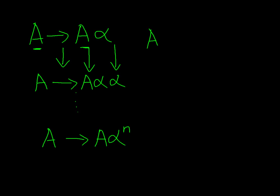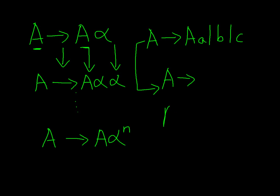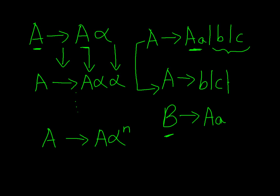Let's say A produces A followed by terminal a, as well as terminal b and terminal c. This will be converted into two productions: A produces something, and we'll take another symbol B that produces something. For the productions of A, ignore the starting production and bring down the other two: b and c. For B, write down the first production — symbol A and terminal a — then write the same productions again followed by symbol B: terminal b with symbol B, and terminal c with symbol B. And write symbol A, terminal a, followed by B.